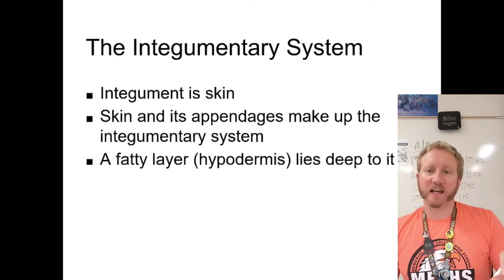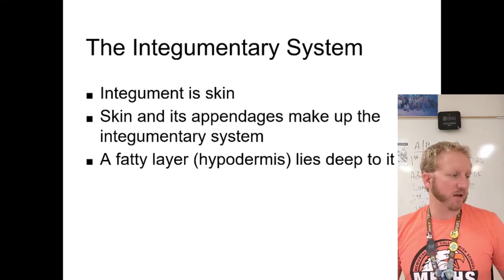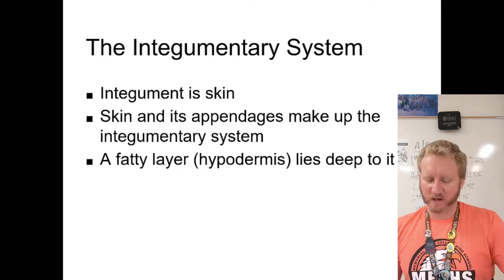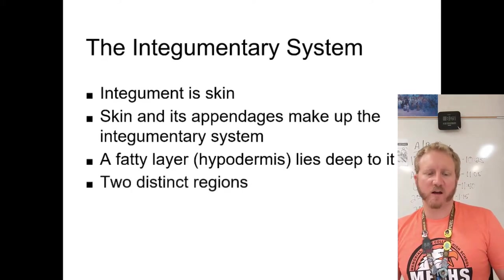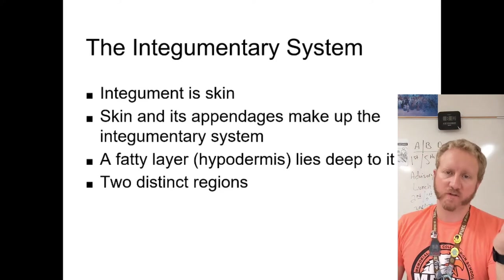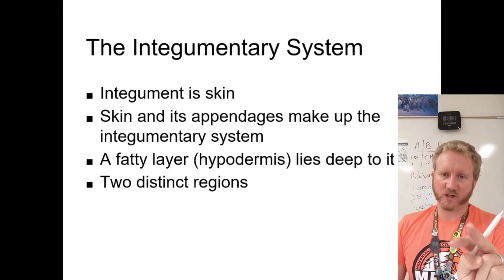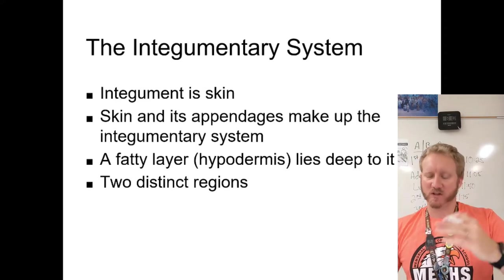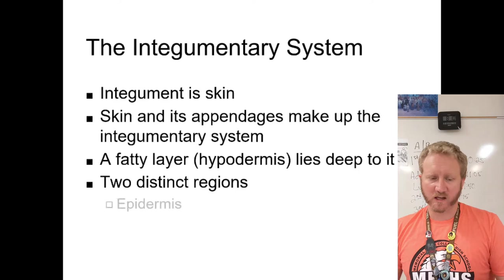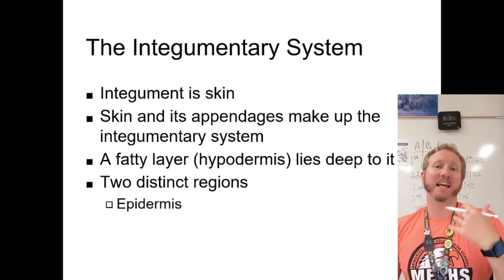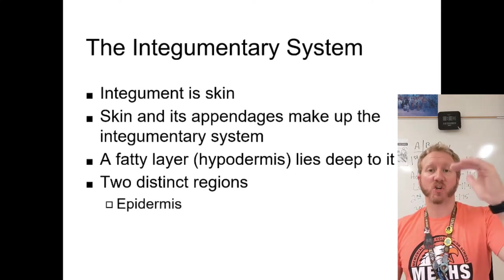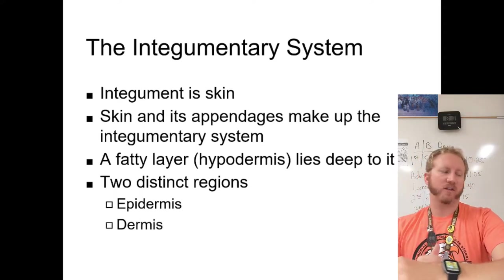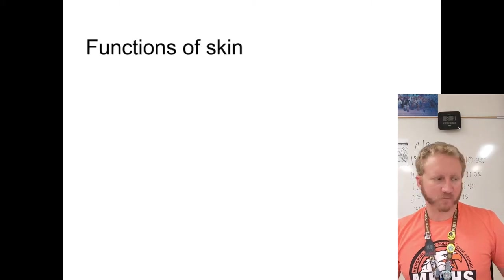There's also a fatty layer underneath called the hypodermis — that's the adipose tissue. You can divide the skin into two regions: the epidermis, with 'epi' meaning towards the surface, and the dermis, which is the layer beneath that.